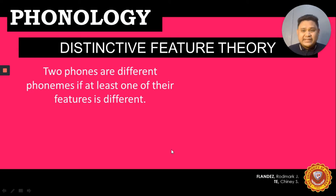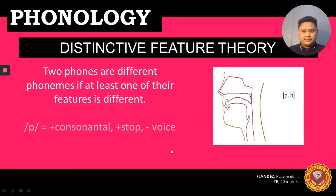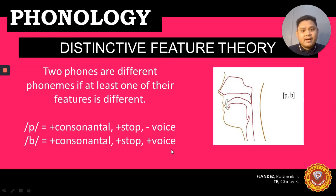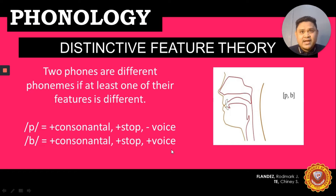Two phonemes are different if at least one of their features is different. For example, P equals plus consonant, plus stop, minus voice; while B equals plus consonant, plus stop, plus voice. The P sound is voiceless while the B sound is voiced. A sound is voiced if the vocal cords vibrate, whereas a sound is voiceless if the vocal cords are not vibrating upon the production of sounds.